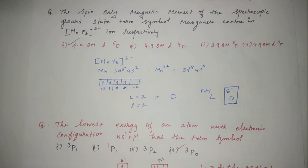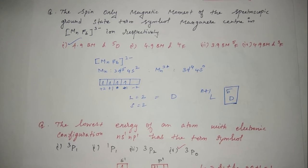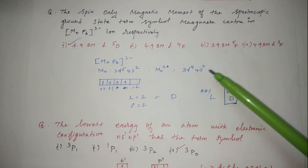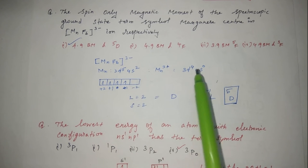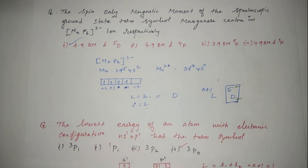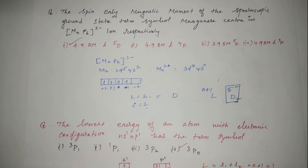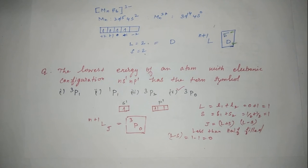Next: find the spin-only magnetic moment of the spectroscopic ground state term symbol for Mn³⁺ in [MnF₆]³⁻. Note that F⁻ is a weak field ligand, so electrons will not pair into inner orbitals. Mn³⁺ is 3d⁴. Number of unpaired electrons is 4; 4+1=5, so spin multiplicity is 5. L=2, so the term is ⁵D. Magnetic moment = √(n(n+2)) with n=4 gives 4.9 Bohr magnetons. Correct option is 1.